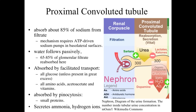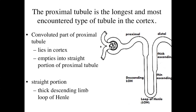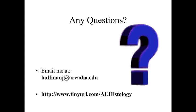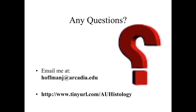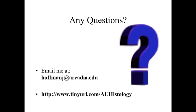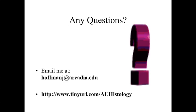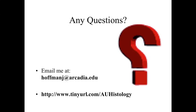The proximal tubule is the longest and most encountered type of tubule within the cortex. It twists around in the region surrounding the glomeruli and then goes into a straight portion, which is the beginning of the descending limb of the loop of Henle. This finishes up our discussion of the first half of our nephron overview. Come back for part two to find out more about the loop of Henle and the distal tubules as we continue to modify the raw filtrate within the urinary system.